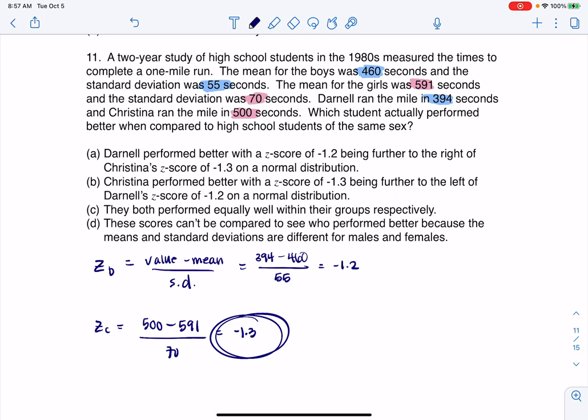So she was further below the mean, relatively speaking, when we compare her with Darnell. So lower z-scores represent better running times. Right, so actually Christina is the one that ran better.